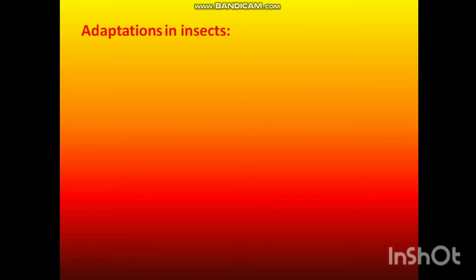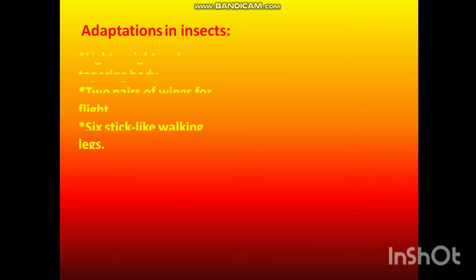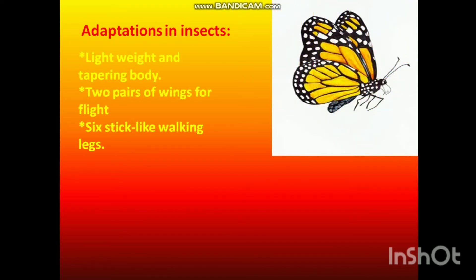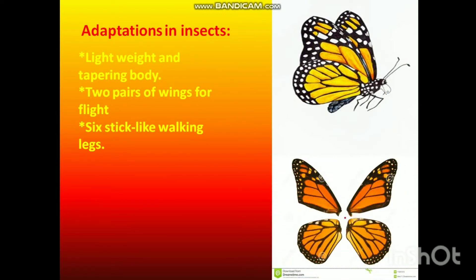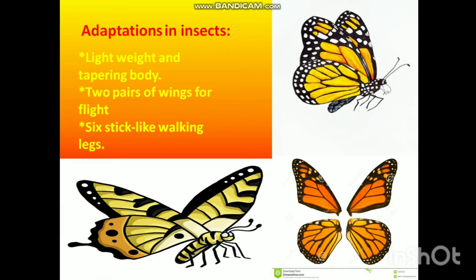Now let us study adaptations in insects. The body of insects is light in weight and tapers at both ends. They can fly with the help of two pairs of wings and can walk with six stick-like walking legs.